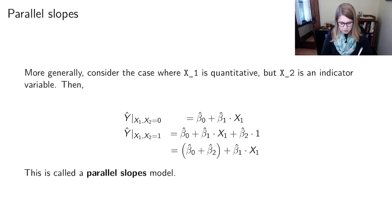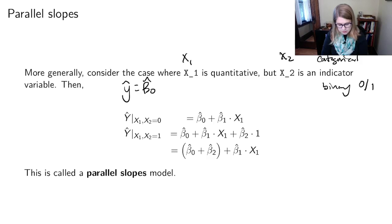We've talked about this a little bit before. We could have a case where x1 is quantitative and x2 is a categorical indicator variable. So it's just binary. It has 0 and 1. And then we could think about our model and we've got y hat equals beta 0 hat plus beta 1 hat x1 plus beta 2 hat x2.